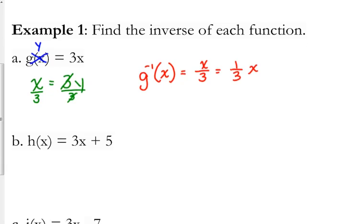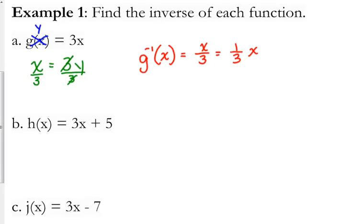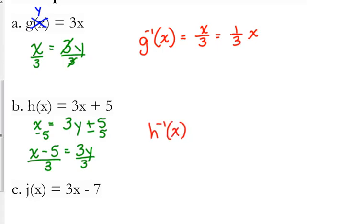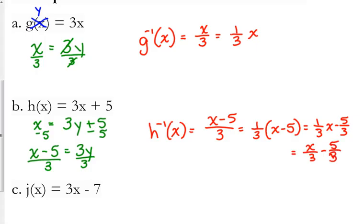Okay, so that was a linear function. It didn't have a y-intercept. Well, the y-intercept is 0. Let's look at one that's a little bit more involved. Let's look at h of x here. So we switch x and y. We've got x equals 3y plus 5. Solving that for y, we need to subtract 5 from both sides. And we're going to divide by 3 again. So h inverse of x is equal to, you can write it as x minus 5 over 3. You can write that as 1 third times x minus 5. You can write that as 1 third x minus 5 thirds. You can write it as x over 3 minus 5 thirds. There are about four different ways that you can write this expression here. But all of them are equivalent. I'm good with any of them. I'm not good with x minus 5 over 3.